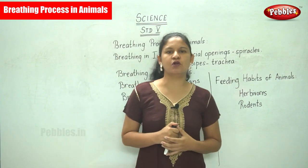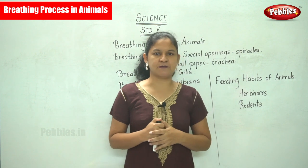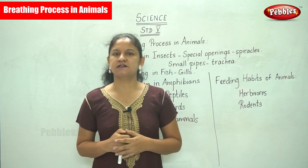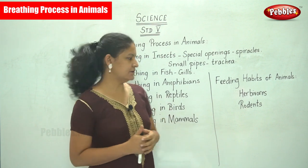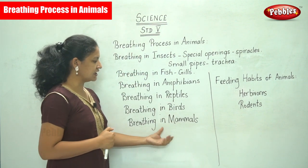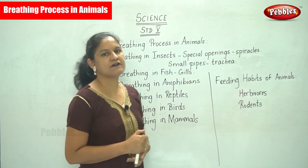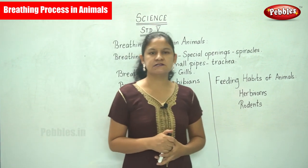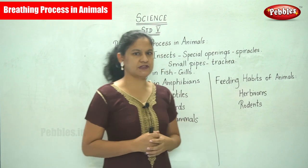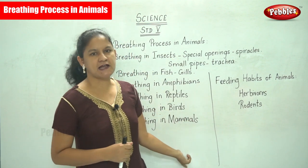Next is breathing in birds. Birds have two small holes on either side of their beak called nares that help them to breathe. Talking about breathing in mammals — mammals have lungs that enable them to breathe. This is the breathing process in animals.